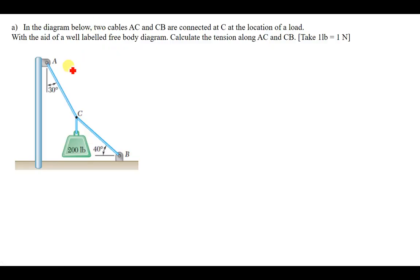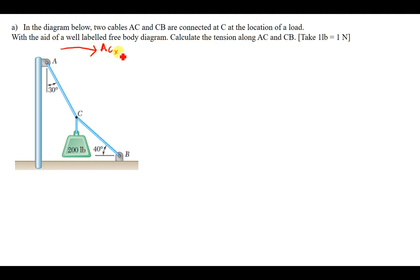What you need to understand in this question is how to resolve forces into two components. We've been given the tension in this rope which is 200 pounds, also considered to be 200 newtons. We can draw a free body diagram. At this point we have AC in the x, AC in the y, and then the resultant AC.